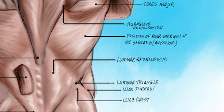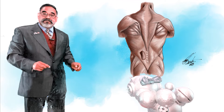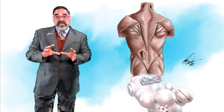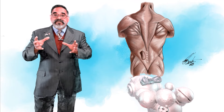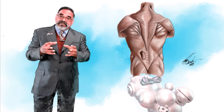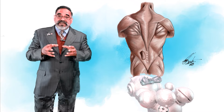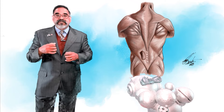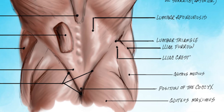We have the lumbar triangle, iliac furrow, iliac crest, gluteus minimus, position of the coccyx, and gluteus maximus — all located at the bottom of the lower back. That part is really vulnerable, where a lot of people misstep, lift wrong, and all that pressure goes right down there. It's a lot of weight for the entire body to carry — it can pull a muscle, strain it, or throw your back out. That's where most injuries occur.